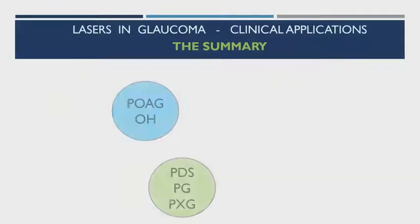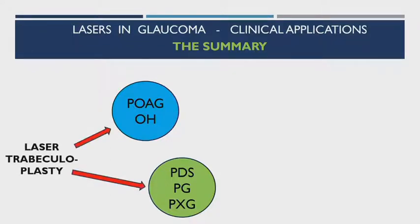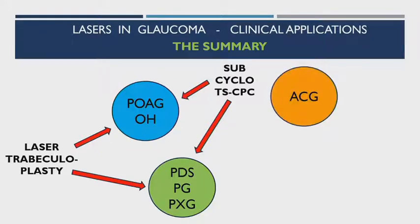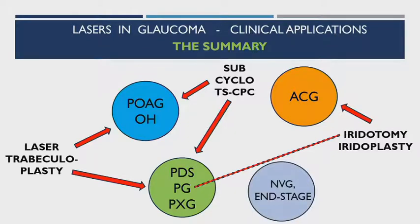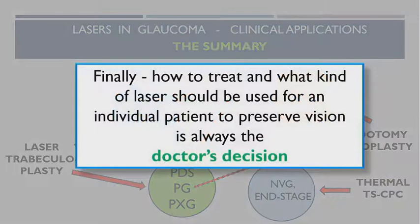Summarizing this short introduction: we have plenty of different glaucomas and plenty of lasers to use. For POAG, ocular hypertension, and some secondary glaucomas like pigmentary or pseudoexfoliation, we have laser trabeculoplasties. As a second-line therapy, we have SubCyclo TCPC. For angle-closure glaucoma, we still have iridotomy and iridoplasty. And for neovascular glaucoma and end-stage disease, we have thermal TCPC as a last-resort treatment. How to treat and what laser to use is, of course, the doctor's decision. Thank you very much.